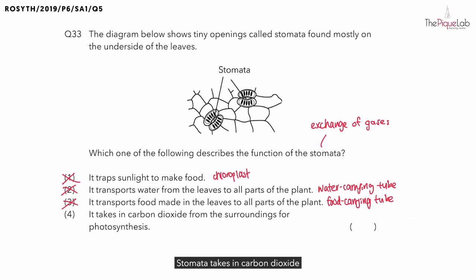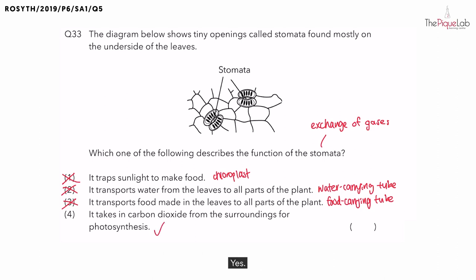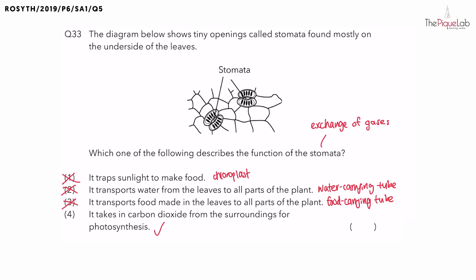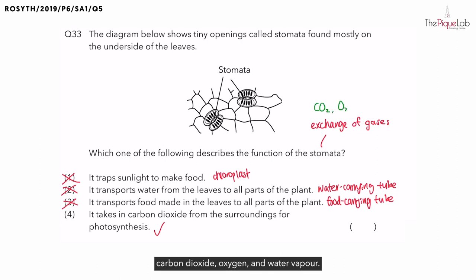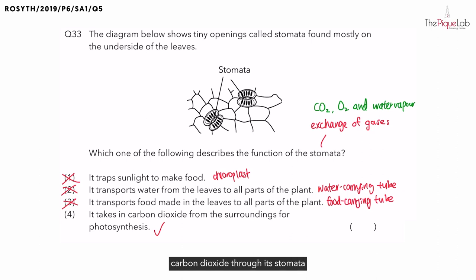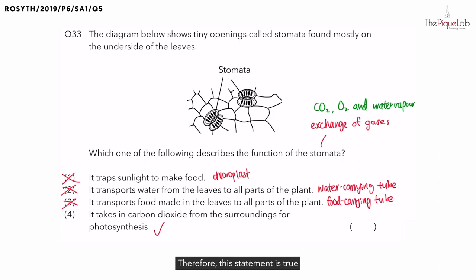Lastly, option four: stomata takes in carbon dioxide from the surroundings for photosynthesis. Is this statement true? Yes. Remember we talked about exchange of gases occurring at the stomata? Some examples of gases being exchanged at the stomata are carbon dioxide, oxygen, and water vapour. So the plant will take in carbon dioxide through its stomata for the process of photosynthesis to make food. Therefore, this statement is true and the correct answer is four.